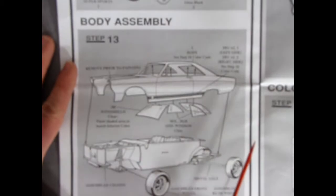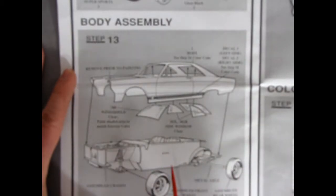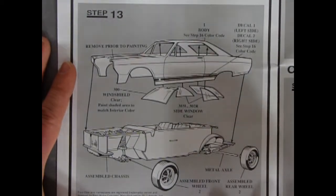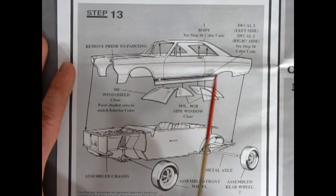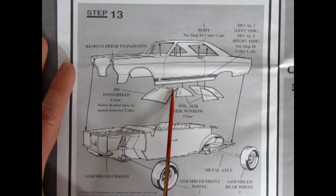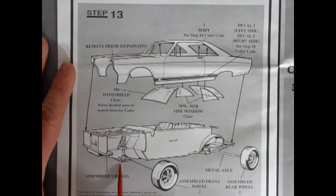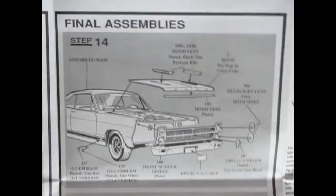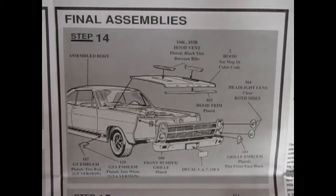And then here. Body assembly 13. We have the body shell going down. The glass going up inside. And these include the sun visors. Which is nice. And then there's our wheels snapping on there in the front. And then going through the metal axle in the back.